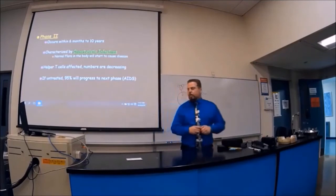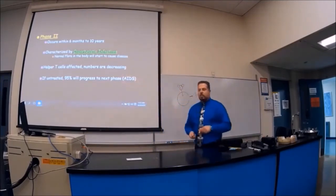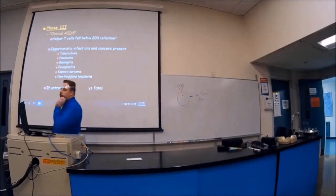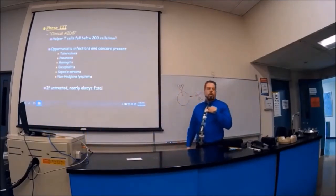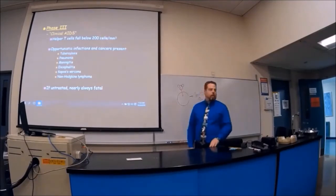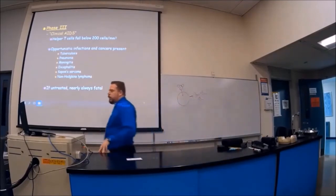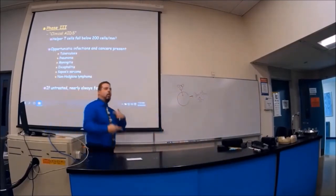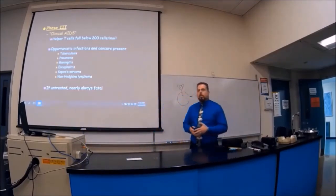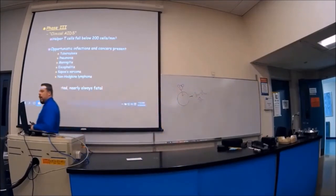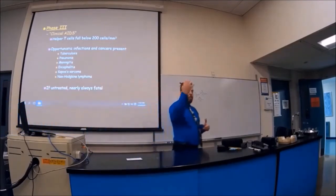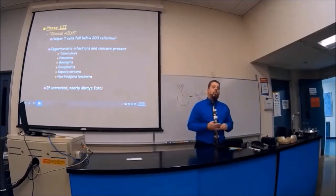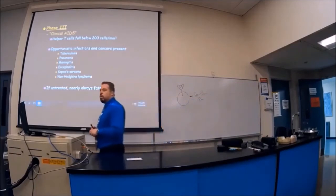If you leave it untreated, 95% will progress to the next phase, which is called AIDS. This is where we got phase three, this is clinical AIDS. The helper T cell numbers have got down to less than 200 cells per millimeter cubed. It's very, very low. It's less than that. The opportunistic infections and cancers are going to start getting higher and higher and higher. That's why when we see people with tuberculosis, one of our biggest concerns is that their immune system has gone down. Could be because it's corticosteroids. Could be that they're just getting older. Because we get older, our immune system goes down, like 85 years old. Or someone who's 30 years old, where their immune system should be up. Our other concern is that, is there HIV in here? Pneumonias, meningitis, encephalitis, which is an infection of the brain.